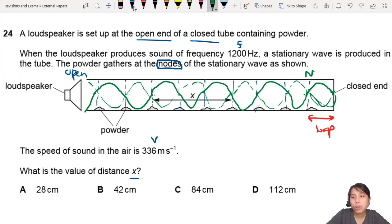So here is between a node and a node. That's one loop, and you're asking for distance x. So distance x here will be 3 times of this loop, which is half a wavelength. Oh, I should label this half a wavelength. So this is half a wavelength plus half a wavelength plus half a wavelength in terms of length.